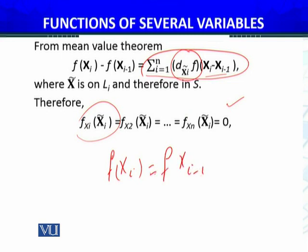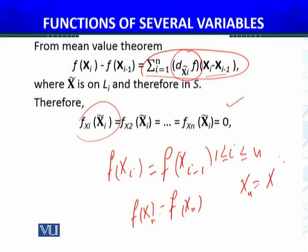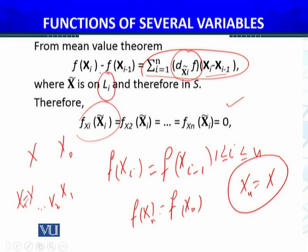Maine pass ye aa gaya hai for each i between 1 aur n ke dermian. To agar main i one rakhoon to mere paas kya aa jayega? f(x₀). Aur i agar n rakhoon to mere paas kya aa jayega? f(x) aa jayega. In fact xₙ aayega, lekin xₙ kis ke equal hai? Maine x ke equal liya hua hai. Yaad hai na ke x aur x₀ ke dermian maine path liya tha, x₁, x₂... xₙ aise points liye the ke xₙ last point tha aur I have the line segments. Ye hi line segments to aise hain. By that way I have proved that f(x) equals f(x₀).